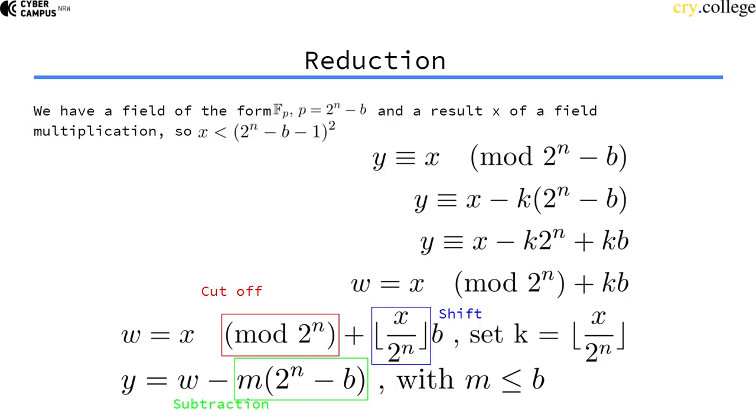So instead of actually multiply here, we can just subtract this term here from w multiple times, which is quite cheap.